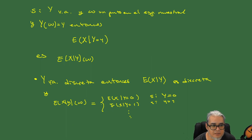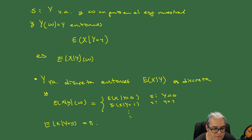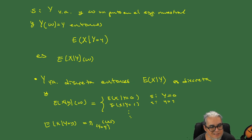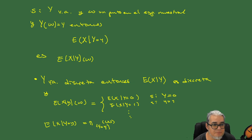Esto lo podemos reescribir como: X dado Y igual a alguna y es igual a la indicadora cuando Y en el conjunto de las y es igual a y, aplicada en el omega. Si el omega está en ese conjunto, entonces ya tenemos la esperanza condicional.